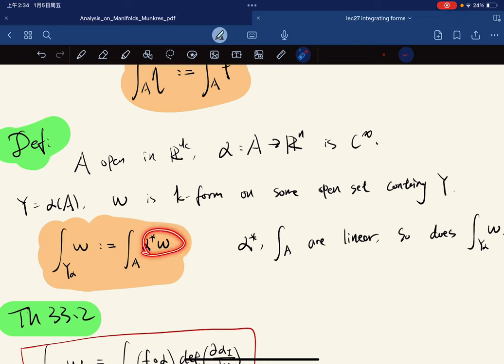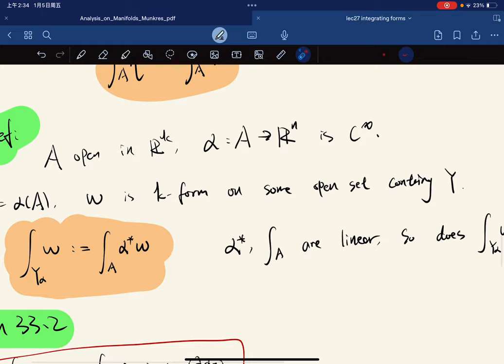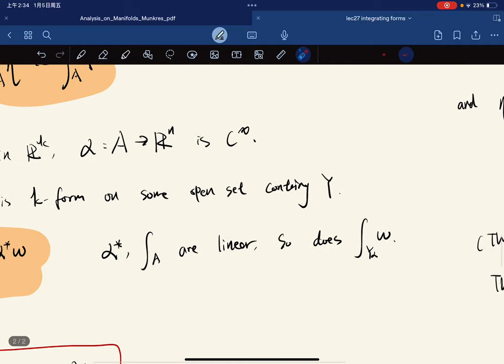We define it to be this form. So this form, the integral of this form on A. And we know that these two are linear, so does this integral.